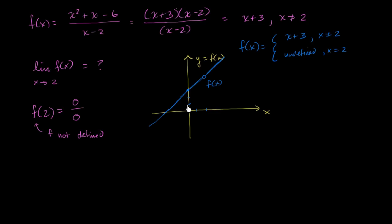Now let's answer our question: What is the limit of f(x) as x approaches 2? We can look at this graphically. As x approaches 2 from below—if we're at 1.7, f(x) is right there. At 1.9, f(x) is there. It seems to be approaching this value.